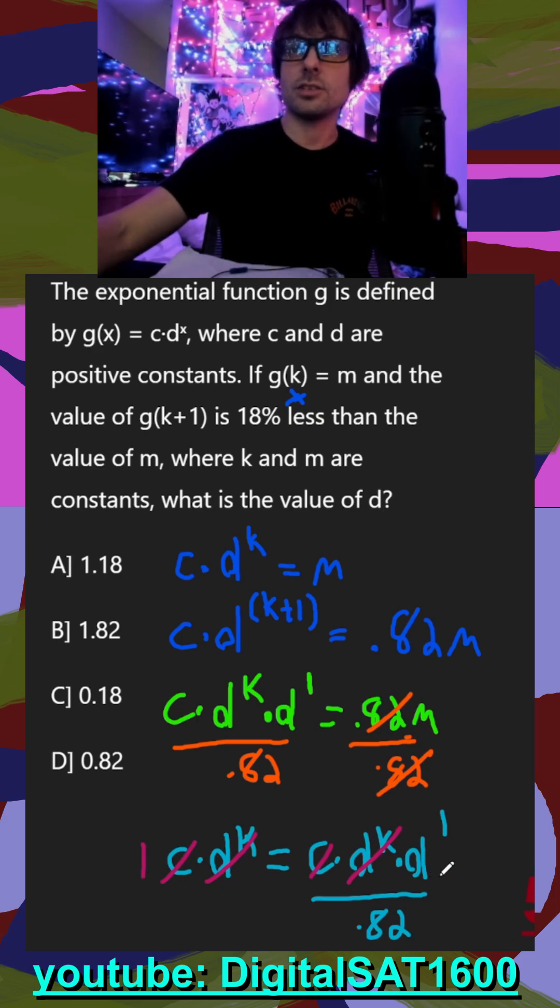And since we want to solve for d, I just multiply both sides by 0.82. That crosses off, and we get d is equal to 0.82, which is going to be answer choice D here.